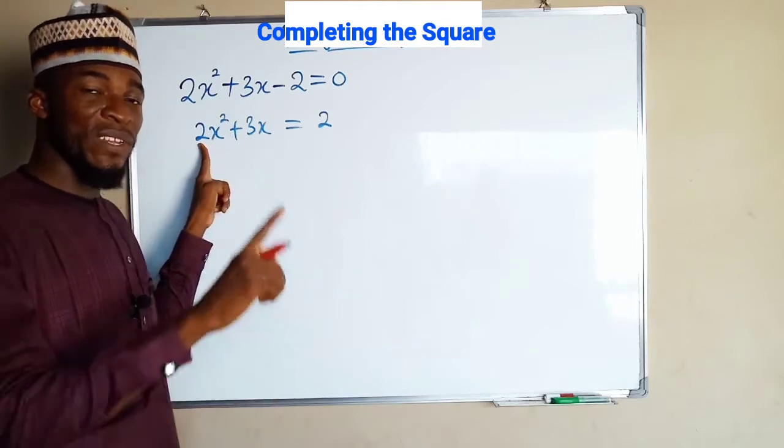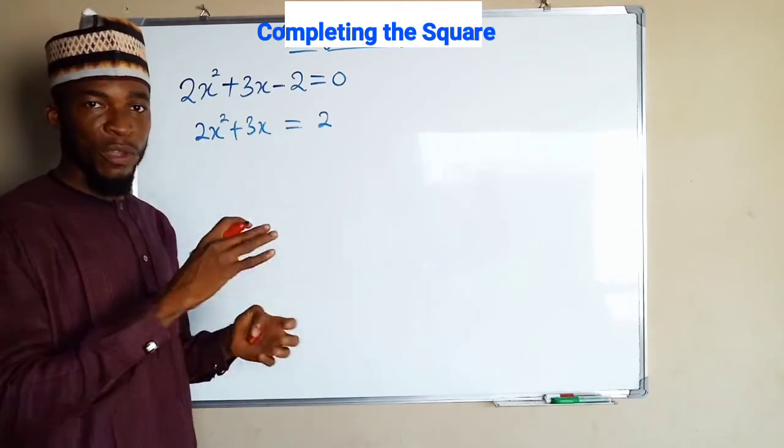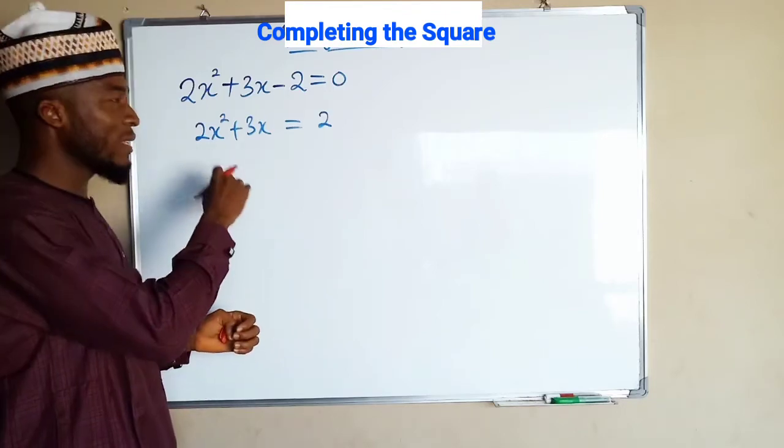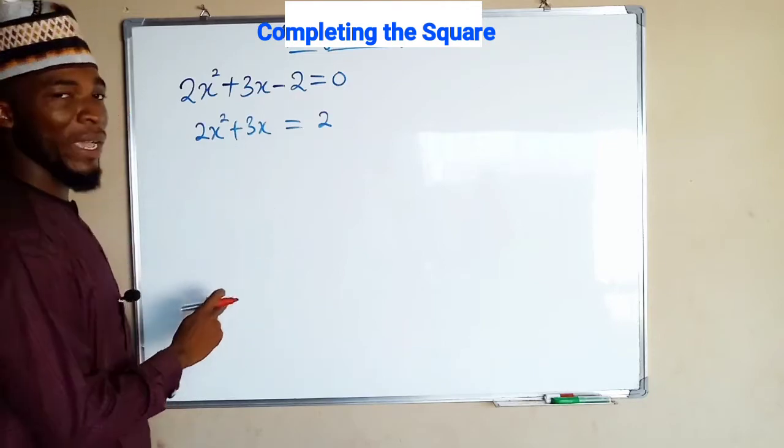Our leading coefficient is 2. If it is 1, you move to the next step. But if it is any other number apart from 1, you have to divide each term by that number. So here we are going to divide each of these terms by 2.